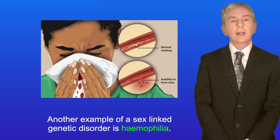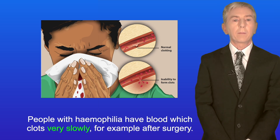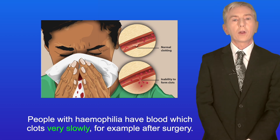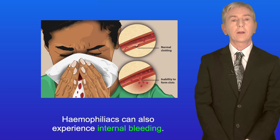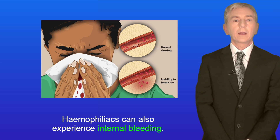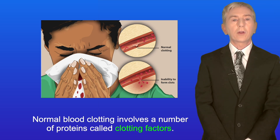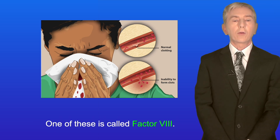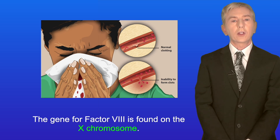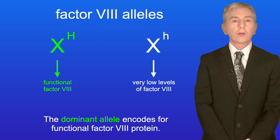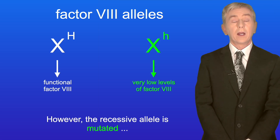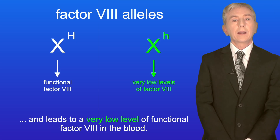Another example of a sex-linked genetic disorder is haemophilia. People with haemophilia have blood which clots very slowly, for example after surgery, and haemophiliacs can also experience internal bleeding. Normal blood clotting involves a number of proteins called clotting factors, one of which is called factor VIII. The gene for factor VIII is found on the X chromosome and has two alleles: the dominant allele encodes functional factor VIII protein, while the recessive allele is mutated and leads to a very low level of functional factor VIII in the blood.